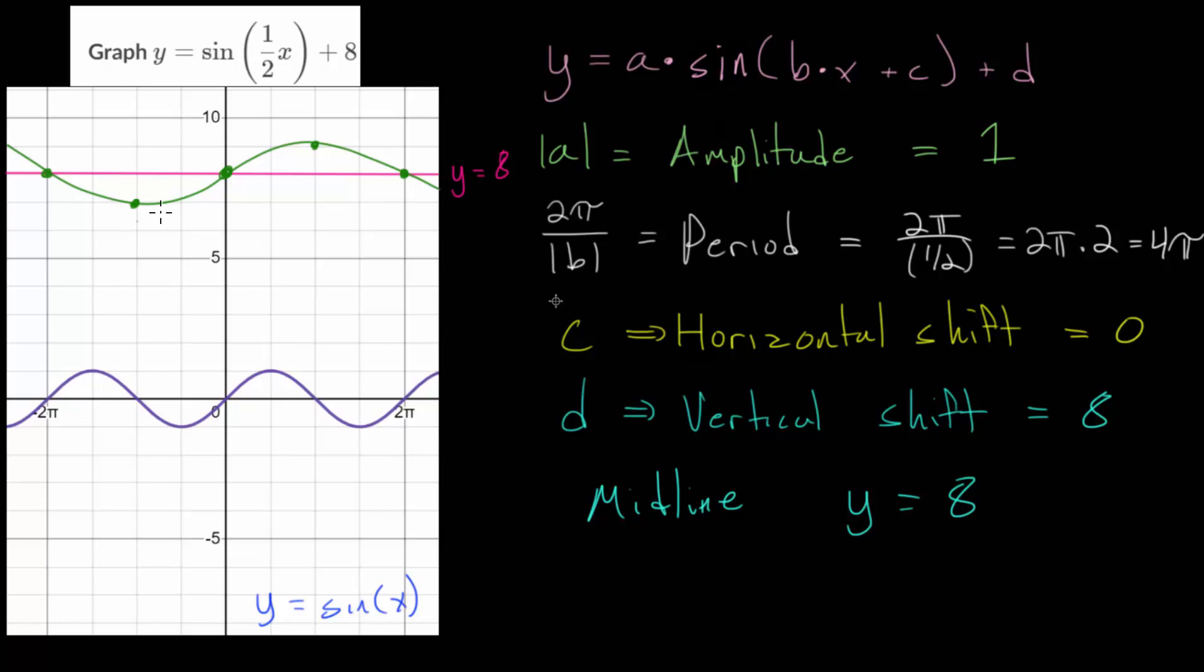And with this picture, we can check that the period is 4π. Since notice, from this point to this point, it completes one unique oscillation, one period. And this is an x value of minus 2π. And this is positive 2π. So this horizontal distance from here to here would, in fact, be 4π. So the period does make sense.